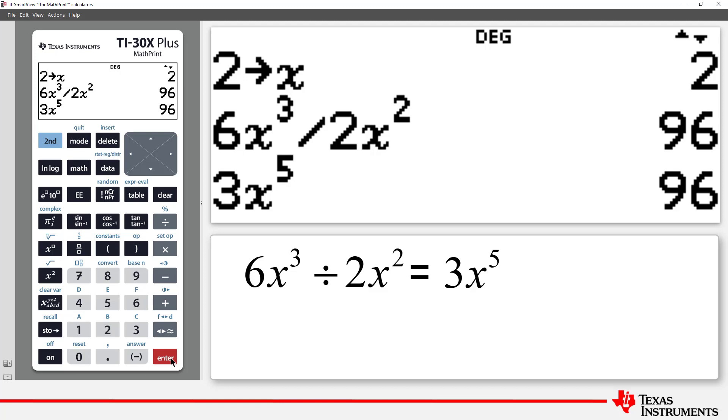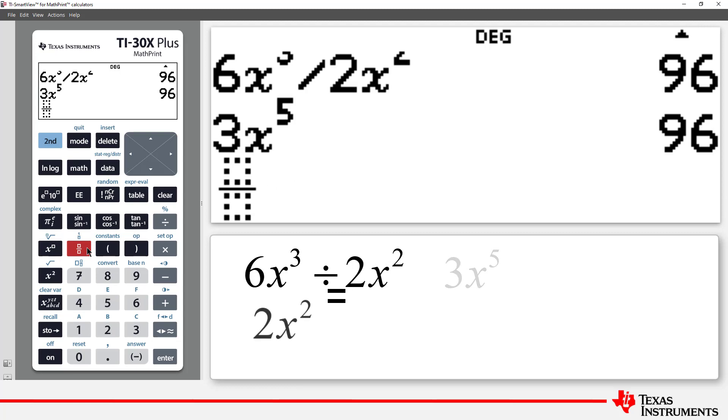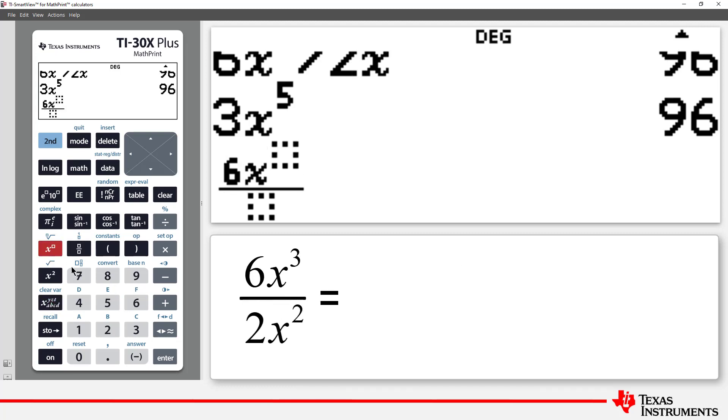Because this is different from 6x cubed over 2x squared, as this expression simplifies to 3x.